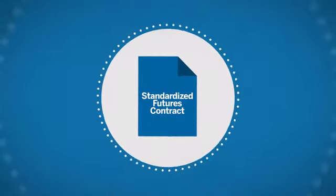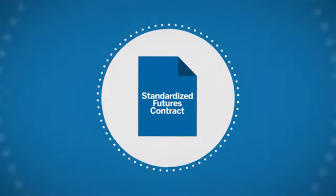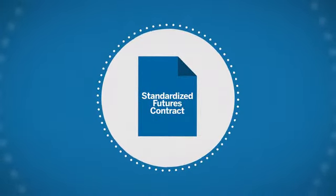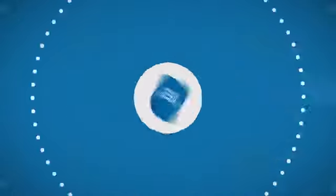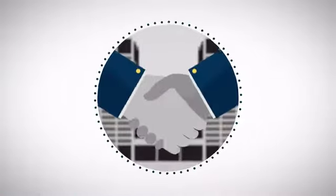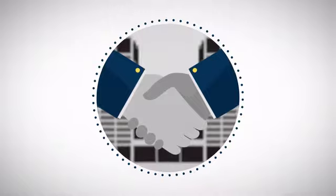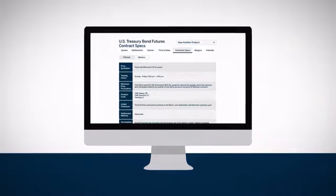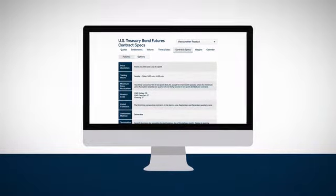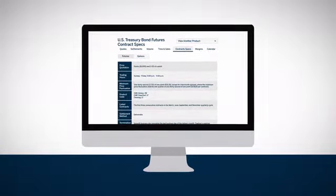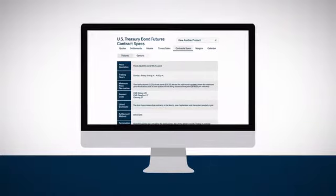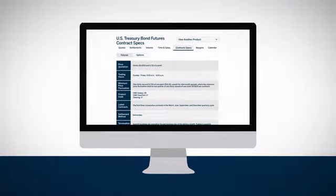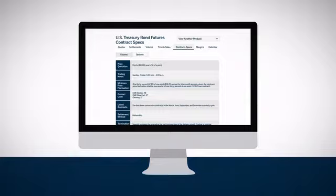Futures markets trade what are known as standardized futures contracts. A futures contract's specifications can be thought of as the contract between the buyer or seller of the futures contract and the exchange that lists and clears that futures contract. Knowing a futures contract's specifications is important because it outlines the contract's terms and obligations. Additionally, it may provide insights into how the contract will price and behave versus the underlying physical product or index.